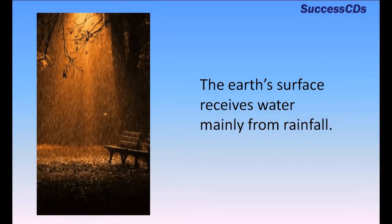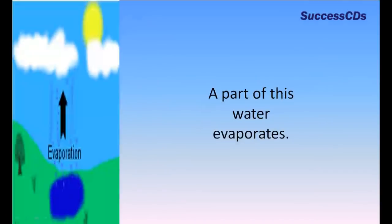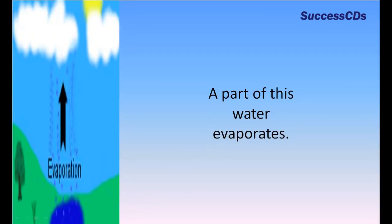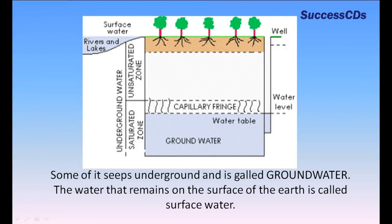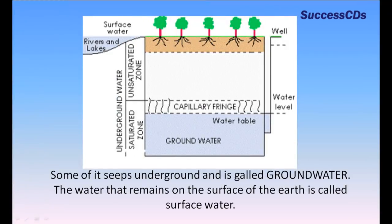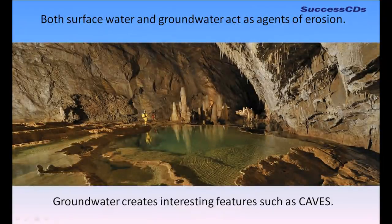The earth's surface receives water mainly from rainfall. A part of this water evaporates. Some of it seeps underground and is called groundwater. The water that remains on the surface of the earth is called surface water. Both surface water and groundwater act as agents of erosion.